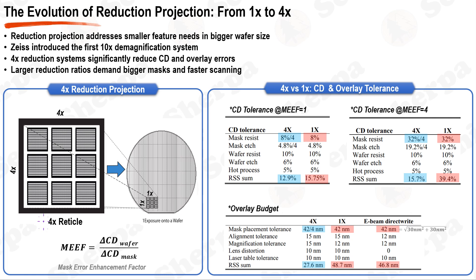Zeiss pioneered this change by introducing the first optical reduction system utilizing 10x demagnification. Modern systems predominantly use a reduction factor of 4x. The root sum square of CD error for 1x systems stands at 15.75%, whereas for 4x systems it's reduced to 12.9%. When the mask error enhancement factor, MEF, is at 4, any error on the mask gets amplified 4 times on the wafer. Furthermore, the overlay error of a 1x system can be a staggering 76% more than its 4x counterpart, underscoring the advantages of a reduction system for CD and overlay control.